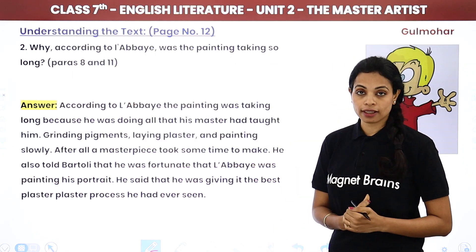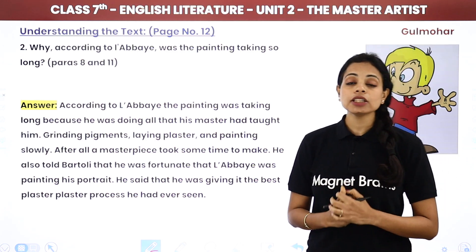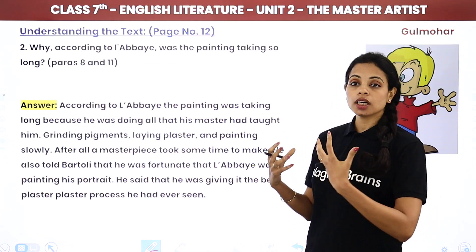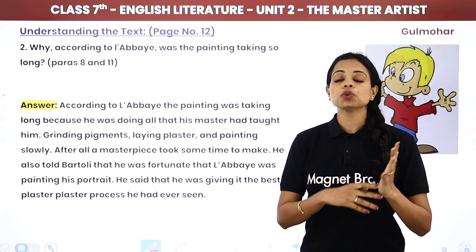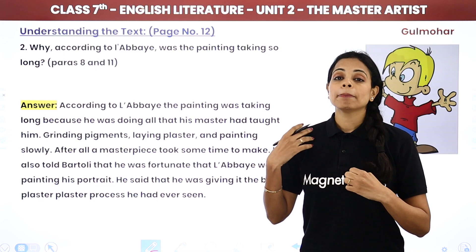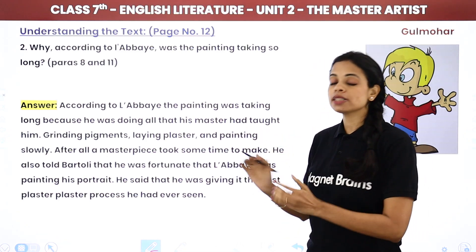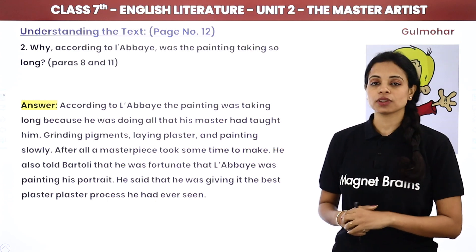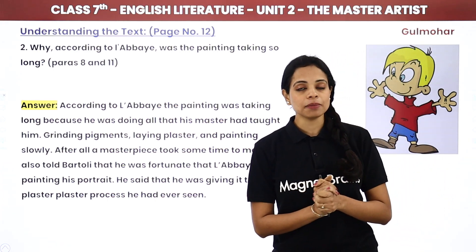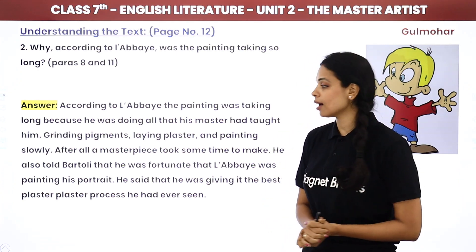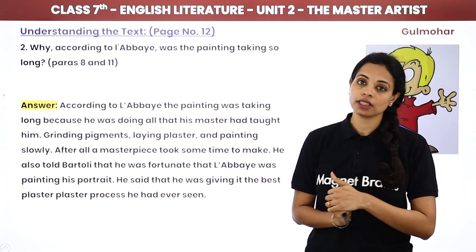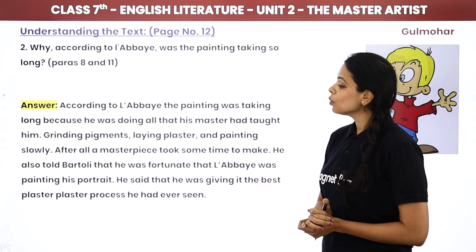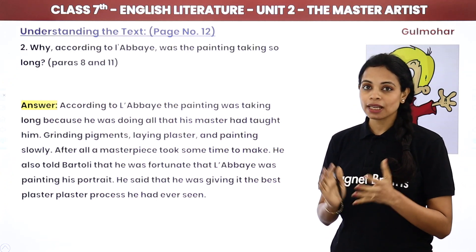The next question: according to Libai, why was the painting taking so long? The painting was taking long because he was doing everything his master had taught him — grinding pigments, laying plaster, and painting slowly. He also told Bartoli that he was fortunate that Libai was painting his portrait. Libai said he was giving it the best plaster process, with four layers of lime plaster, which would last for life. He was doing it very diligently and minutely, and that is why it was taking a long time.